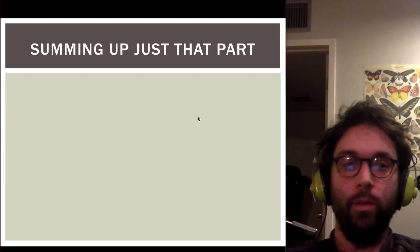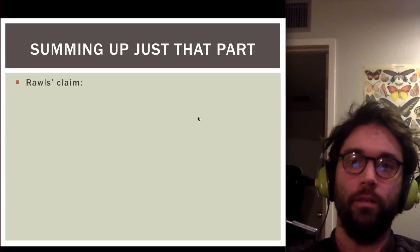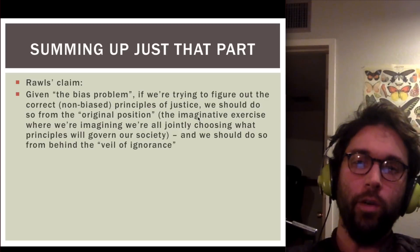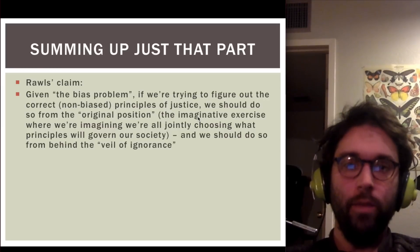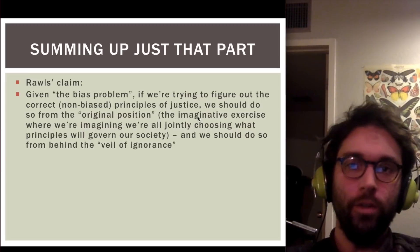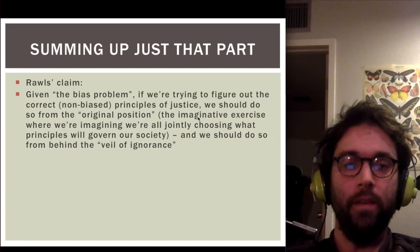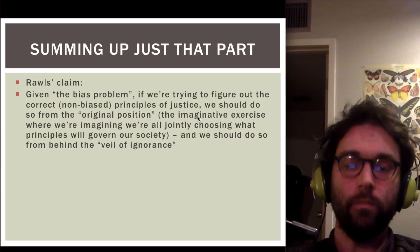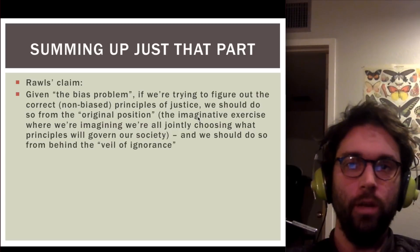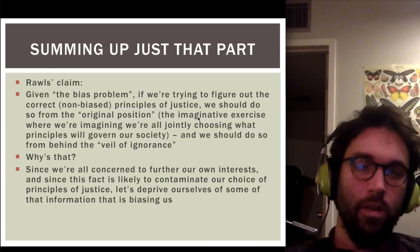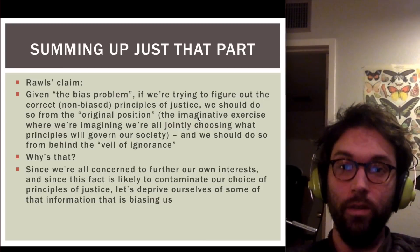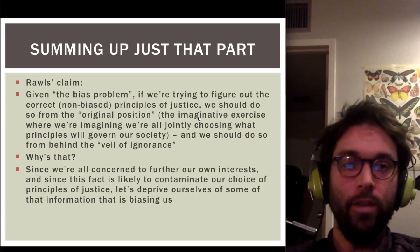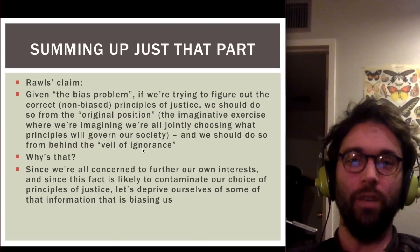To sum up: given the bias problem, if we're trying to figure out the correct, non-biased principles of justice, we need to do so from the perspective of the original position — the imaginative exercise where we jointly choose the principles governing our society — and we should do so from behind the veil of ignorance, where certain facts about who we'll be in society are blocked off from us. Since we're all concerned to further our own interest — which is likely to contaminate our choice of principles — we should deprive ourselves of that biasing information. That's what the veil of ignorance accomplishes.